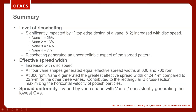Spread width increased with disc speed — we know that, and it happened for all four veins. At 600 and 700 RPM, the effective spread widths were the same across all four veins. The unique finding came at 800 RPM, where vein four generated the greatest effective spread width of 24 meters compared to 23 meters for the other three veins. At 800 RPM, we saw an increase in the horizontal velocity of potash particles exiting that vein, which we attributed to the U- or C-section of that type of vein.